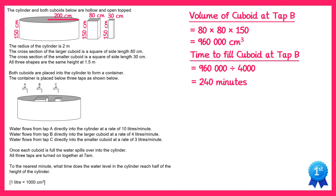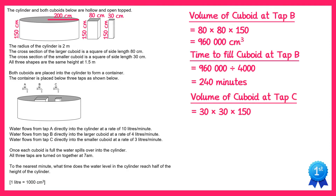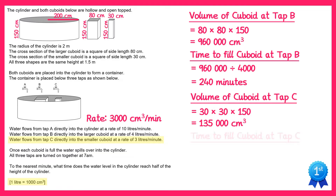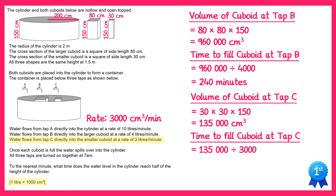We can repeat this process in exactly the same way for the cuboid at tap C. The volume of that cuboid would be 30 times 30 times 150, which is 135,000 centimetres cubed. This tap flows a little slower at 3 litres per minute, a rate of 3000 centimetres cubed per minute. So the time to fill this cuboid is 135,000 divided by 3000, which gives you 45 minutes.